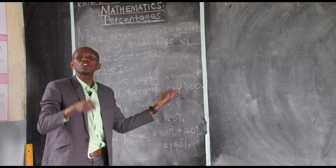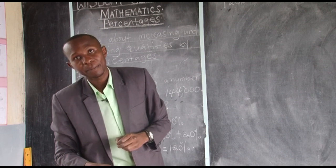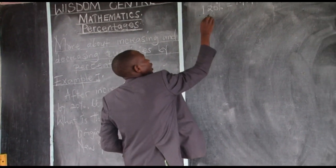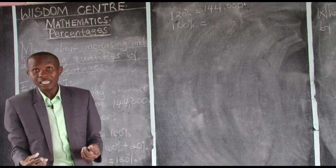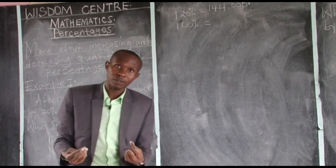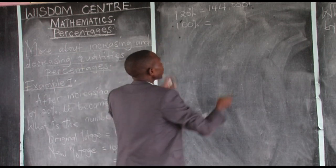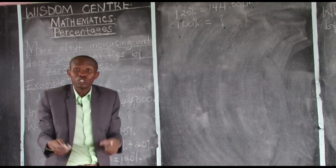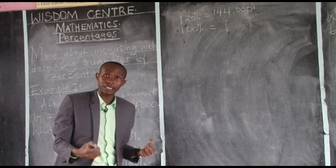The original number we don't know — that's what they want us to find. The original percentage we don't know either, because we don't know the number they increased. It is the number they want us to find out. We shall put a question mark there, meaning we don't know the number that was increased to give us 144,000.